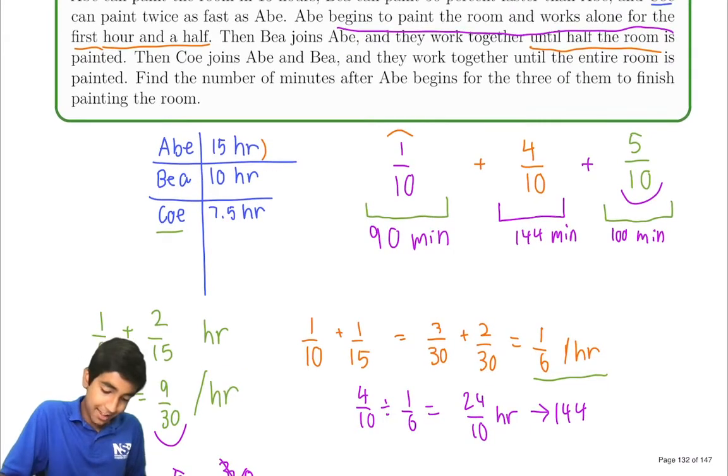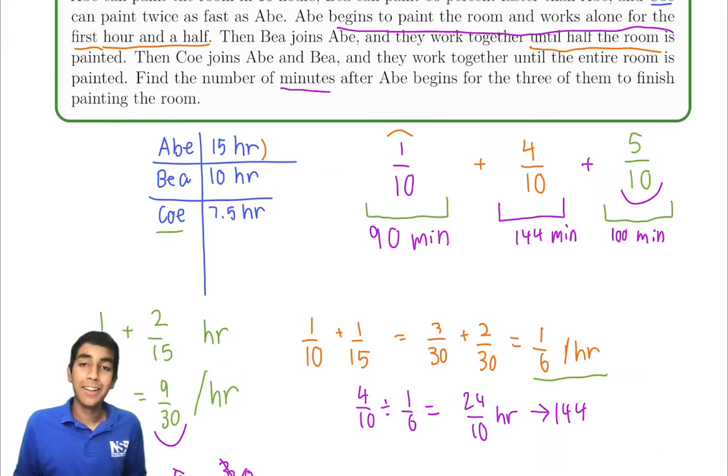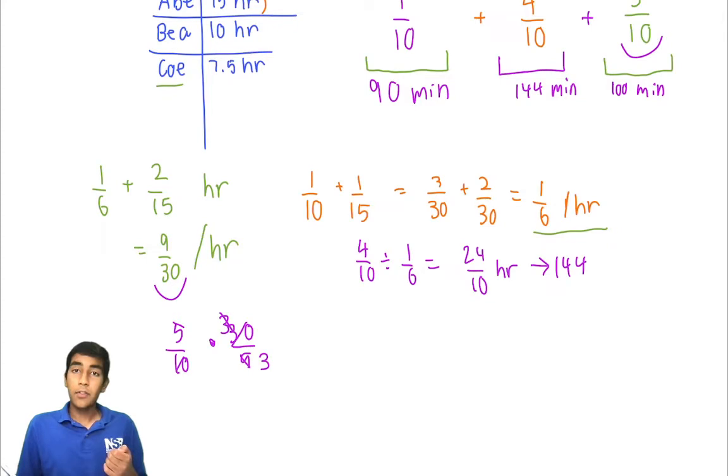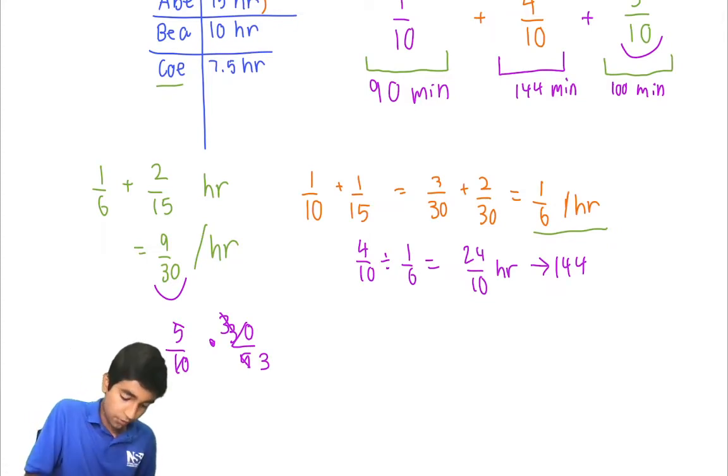And now the question sneakily says, find the number of minutes after Abe begins for the three of them to finish. We add them up: 90 plus 144 plus 100. That's 234 plus 100, 334. Final answer.